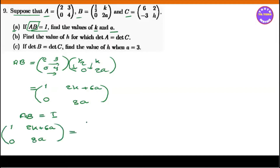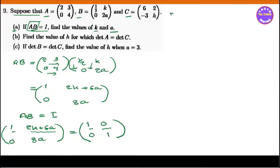This is equal to I. I is 1, 0, 0, 1 — the 2 by 2 identity matrix. The matrix is equal to the matrix. So we get 1, 1, 2, and 2. And 2K plus 6A is equal to 0.